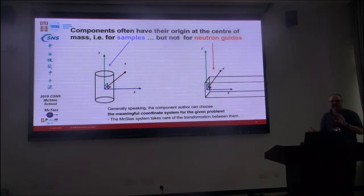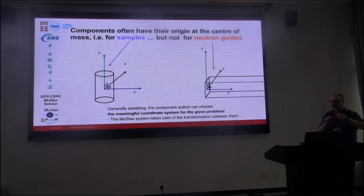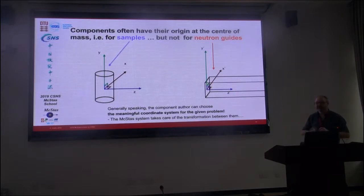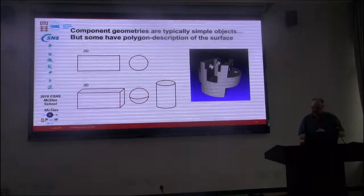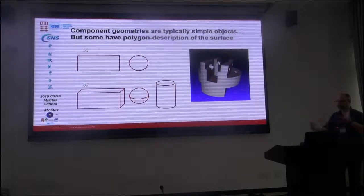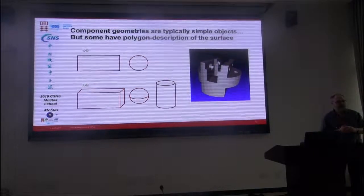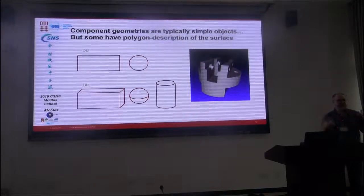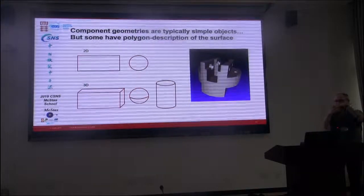The reason is that none of these components are really aware of each other — they are independent, they know nothing of each other other than the position. The McStas system takes care of the transformation between local coordinate systems. Geometry-wise, in two dimensions the shapes we have are rectangular or circular, and in three dimensions you can use boxes, spheres, or cylinders. We also have a polygon description that some components allow, which describes the different vertices and faces — typically triangles — that together make the outer shape of the object.